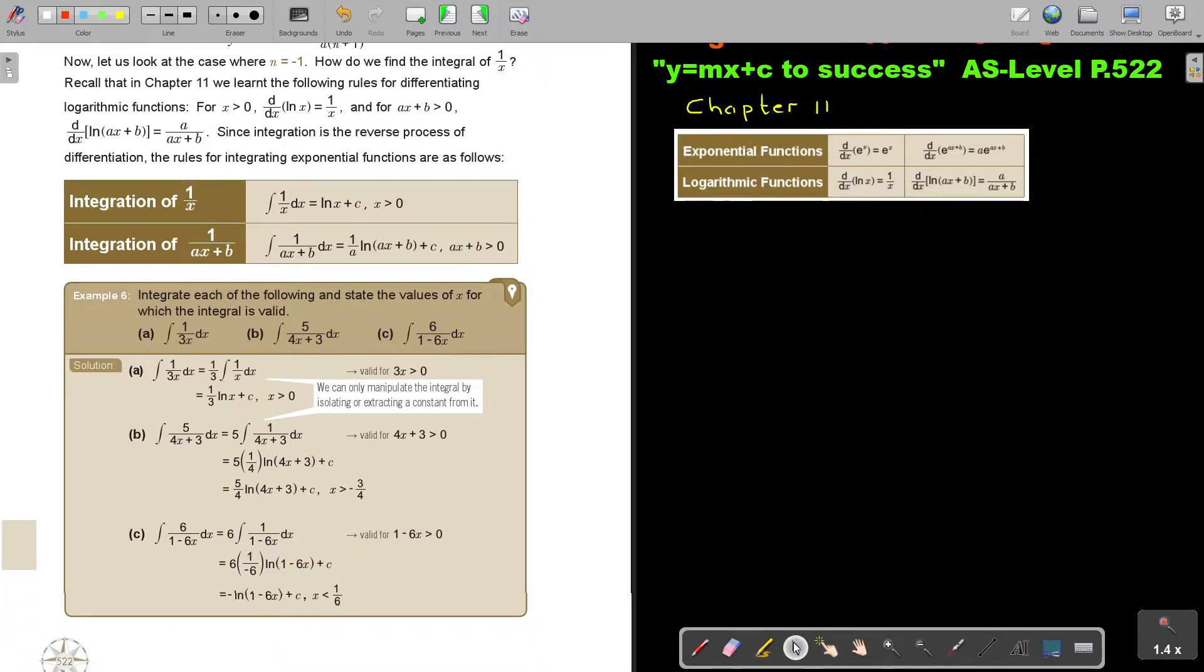Integrate each of the following and state the values of x for which the integral is valid. In this case, you can take the 3 in front, that's the constant, and then it's 1 over x. Integrate it and it's ln x plus c. And x must be bigger than 0. For the second one, I moved the 5 to the front, then apply the rule. It's 1 over a, and a is the value in front of x. So it's 1 over 4 times ln of that bracket at the bottom plus c. This must be bigger than 0, so x is bigger than negative 3 over 4.